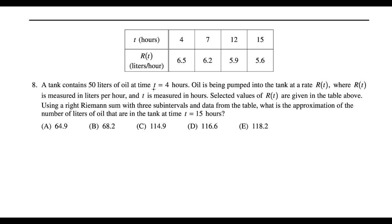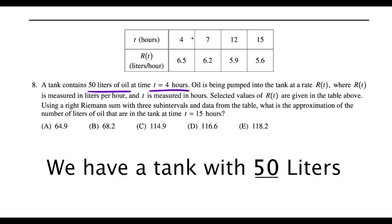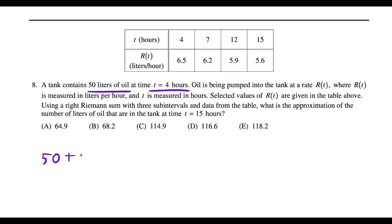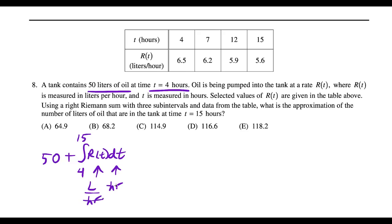Question eight: a tank has 50 liters of oil at t = 4. Oil is pumped in at rate r(t) with select values given. We're using a right Riemann sum with three subintervals to approximate liters at t = 15. The setup is: 50 + ∫₄¹⁵ r(t) dt, because liters/hour × hours = liters, and there are already 50 liters at the start.